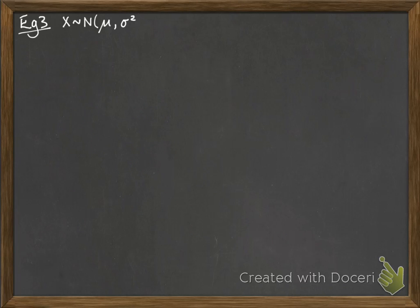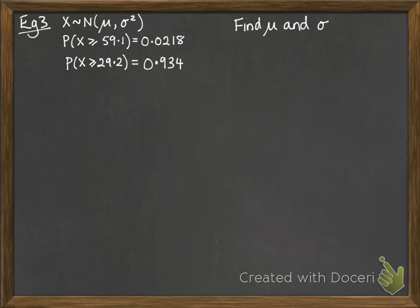You might also be given enough information to be able to find mu and sigma at the same time. Now this involves some simultaneous equations. So we've got this distribution around mu. There's 59.1, and we're told that the probability of it being above that value is 0.0218.